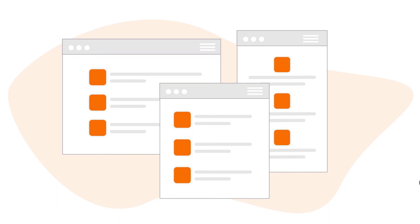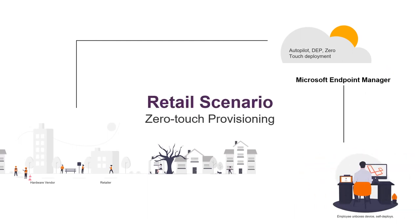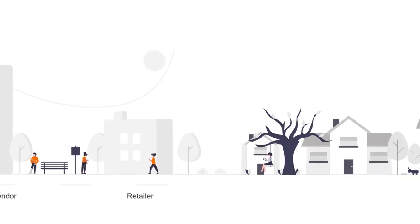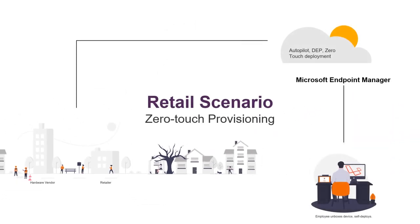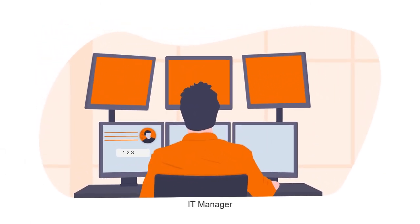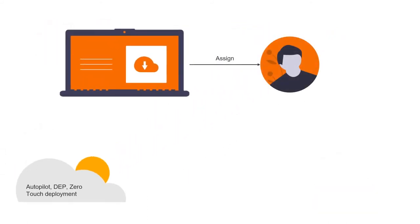That's the process if you order through a hardware vendor. Now consider a scenario where you're buying through a retailer instead. In this case, if you don't have the device registration service configured, someone has to manually enter the device ID in the autopilot portal. The IT person will have the device delivered to them, or they can request the device ID from the retailer beforehand. Once they have the information, they manually enter it in the autopilot portal and assign the respective profile.